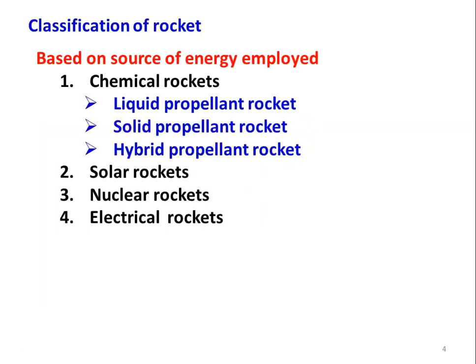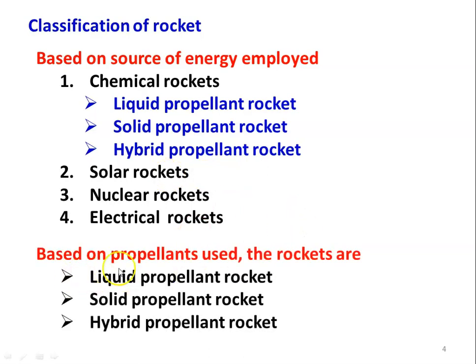Classification of rockets: based on the source of energy employed, rockets are classified into four types. Chemical rockets may be liquid propellant, solid propellant, or hybrid propellant rockets. We will discuss liquid propellant, solid propellant, and hybrid propellant rockets in this lecture. There are also solar rockets where the source of energy is solar energy, nuclear rockets where the source is nuclear energy obtained by nuclear fusion, and electrical rockets where the source of energy is electrical energy from a storage battery. Based on the propellant used, rockets are classified as liquid propellant, solid propellant, or hybrid propellant rockets.